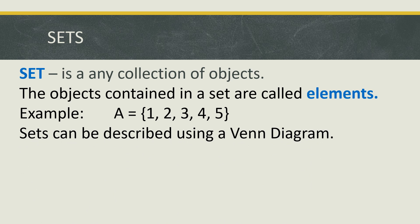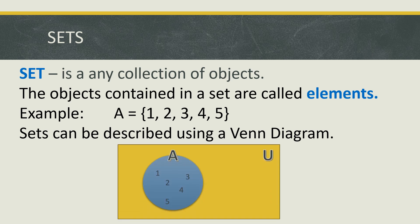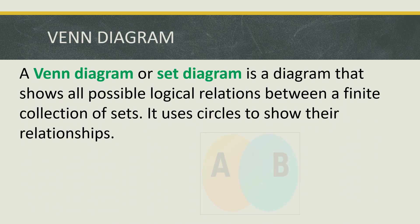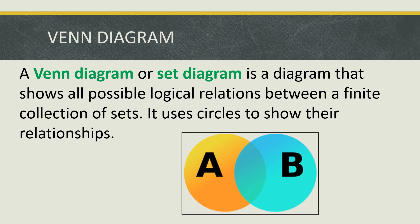Sets can be described using a Venn Diagram. As for our example, set A — this is its illustration using the Venn Diagram, where all of the elements of set A are in circle A. A Venn Diagram, or set diagram, is a diagram that shows all possible logical relations between a finite collection of sets. It uses circles to show their relationships. On our illustration, it shows the relationship of set A and set B.